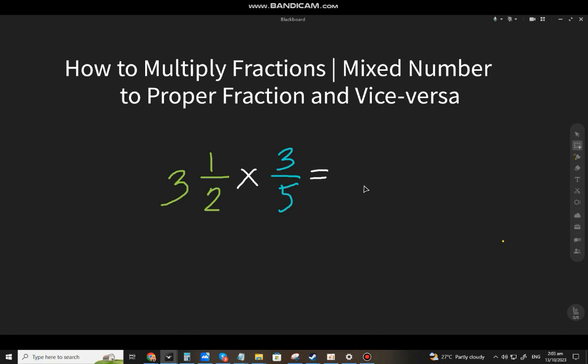If you have a mixed number and you multiply the proper fraction, you need to replace the mixed number in the proper fraction. So that will be 2 times 3 is 6, plus 1 will be 7, so 7 over 2 now, or 7 halves. That's the time that you can multiply it.